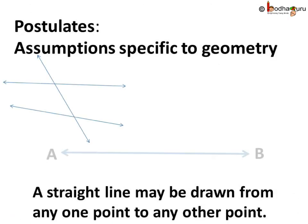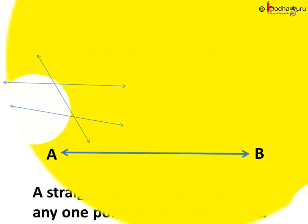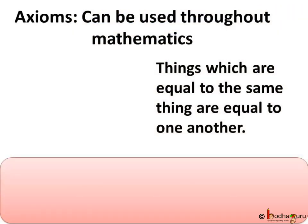As we already know, Euclid wrote down many assumptions which are actually obvious universal truths. A few assumptions were only for geometry, which he called postulates — for example, a straight line may be drawn from any one point to any other point. And a few assumptions could be used throughout mathematics, which are called axioms. For example, one axiom is: things which are equal to the same thing are equal to one another.